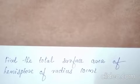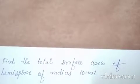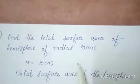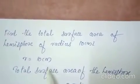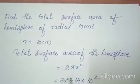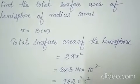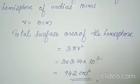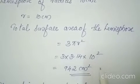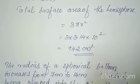The third question: find the total surface area of a hemisphere of radius 10 cm. Here they have given a hemisphere and the radius: r equals 10 cm. For a hemisphere, we use the formula 3 pi r square. So 3 into 3.14 into 10 square, that is 10 into 10. While multiplying this, you will get the answer 942 cm square.